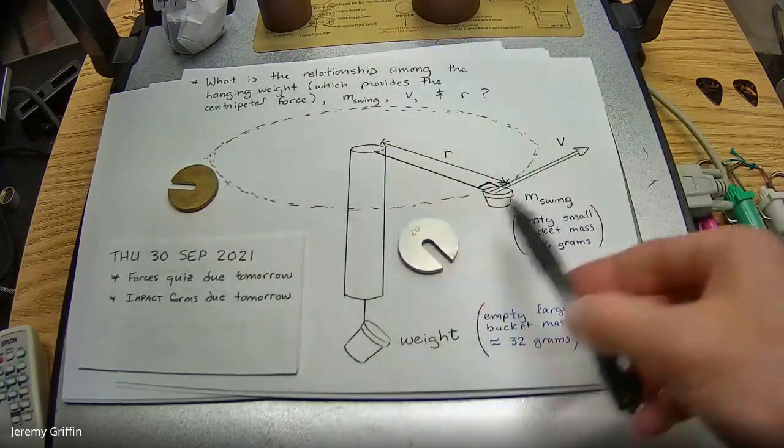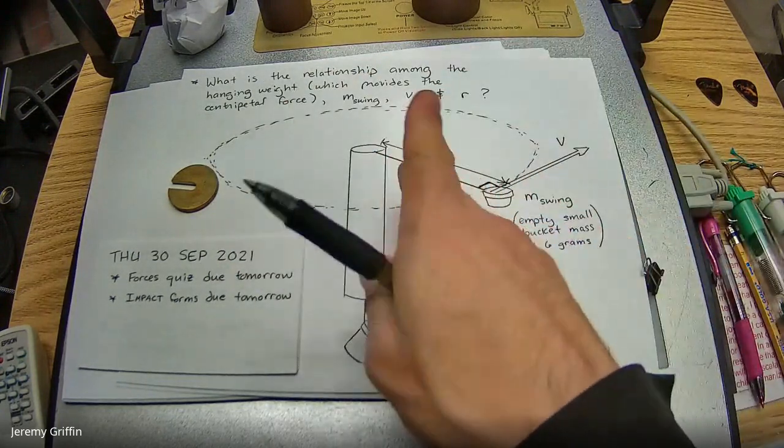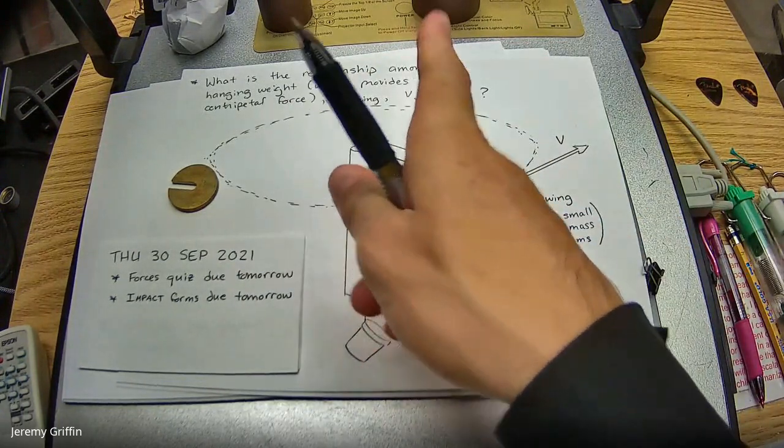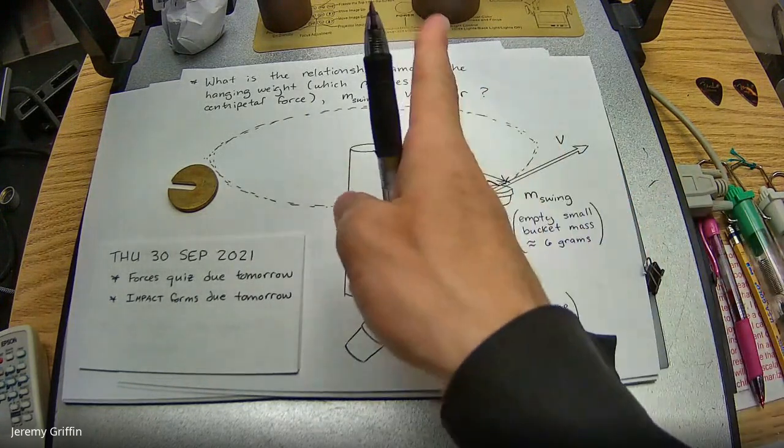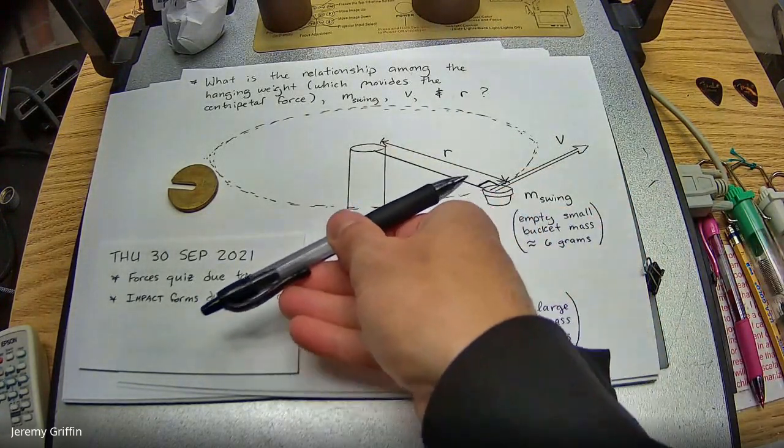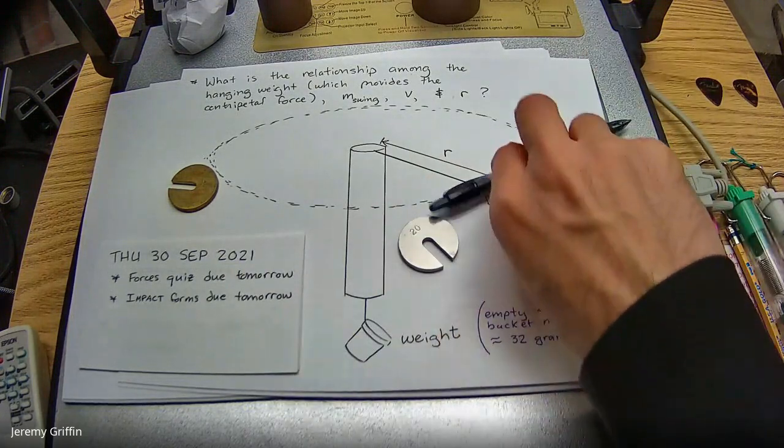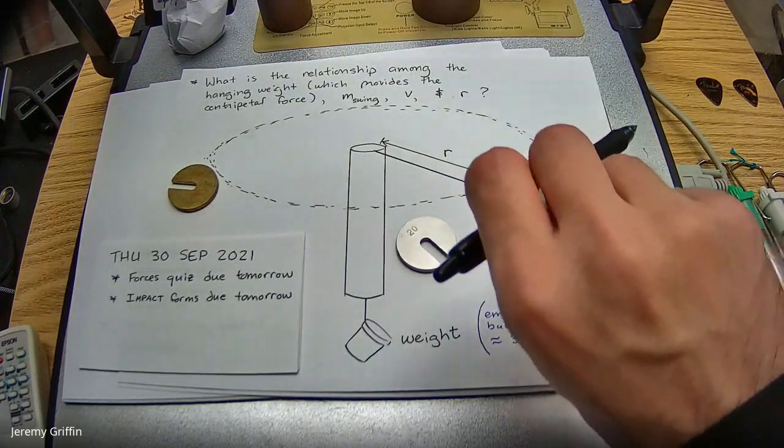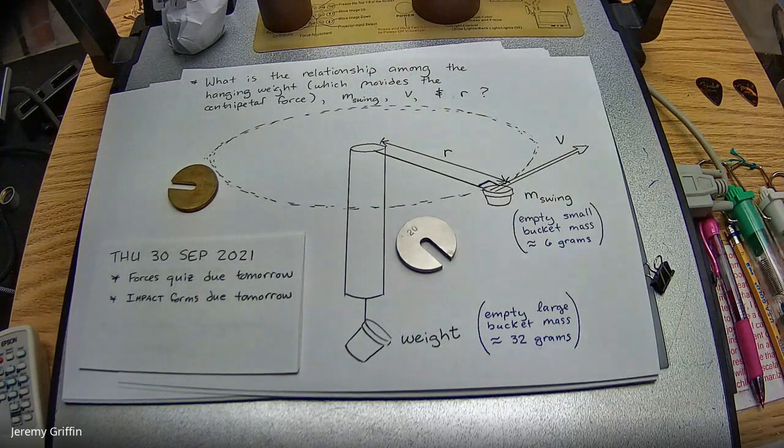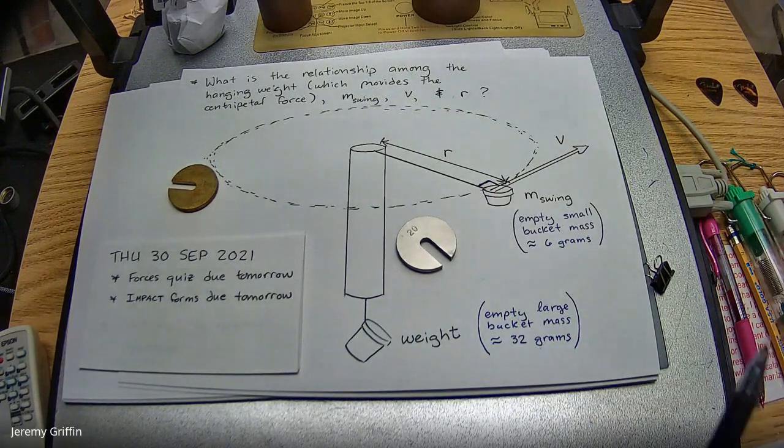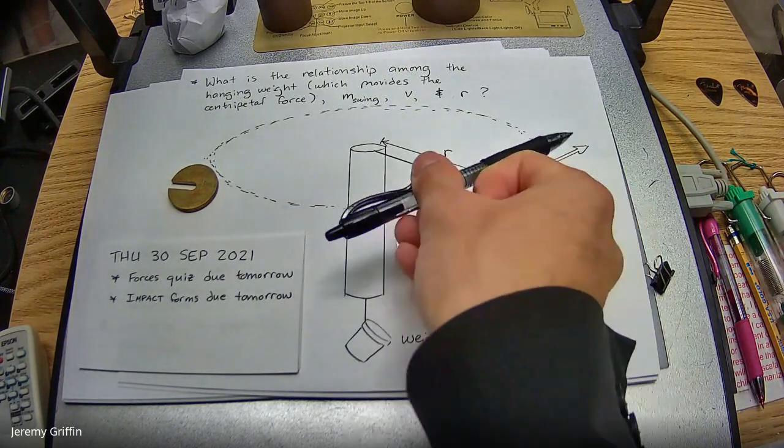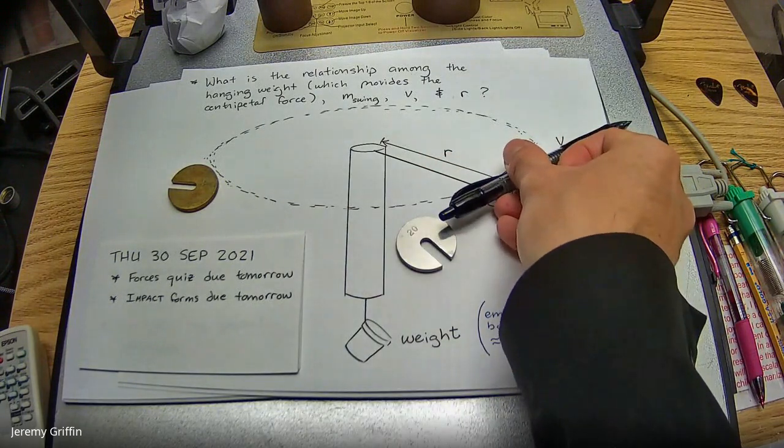Now, why would that be? Well, think about this. If it's flying around a circle, what if you cut this string? Which way is this going to go? Isn't it just going to fly off tangent to its path? Which means Newton's first law of motion says that any object in motion wants to maintain its velocity. That's to say speed and direction of motion.